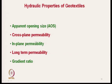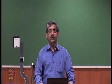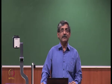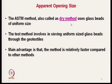In hydraulic properties we will discuss: apparent opening size, cross-plane permeability, in-plane permeability, long-term permeability, and gradient ratio. For apparent opening size, per the ASTM dry sieving method, glass beads of uniform size are used. The method involves sieving uniform-size glass beads through the geotextile, and the main advantage is that it is relatively faster and simpler compared to other methods.